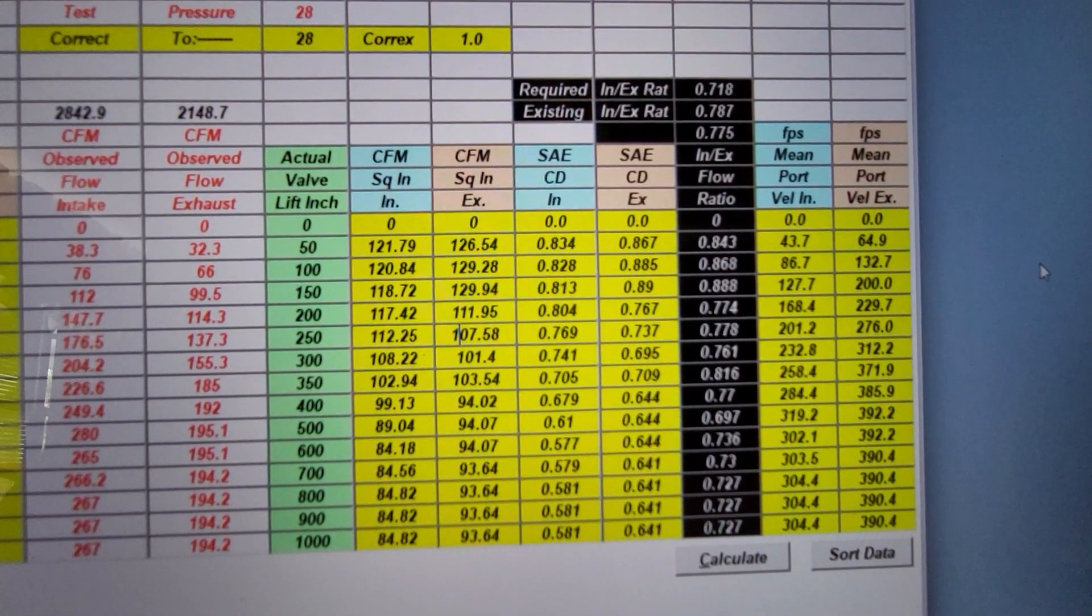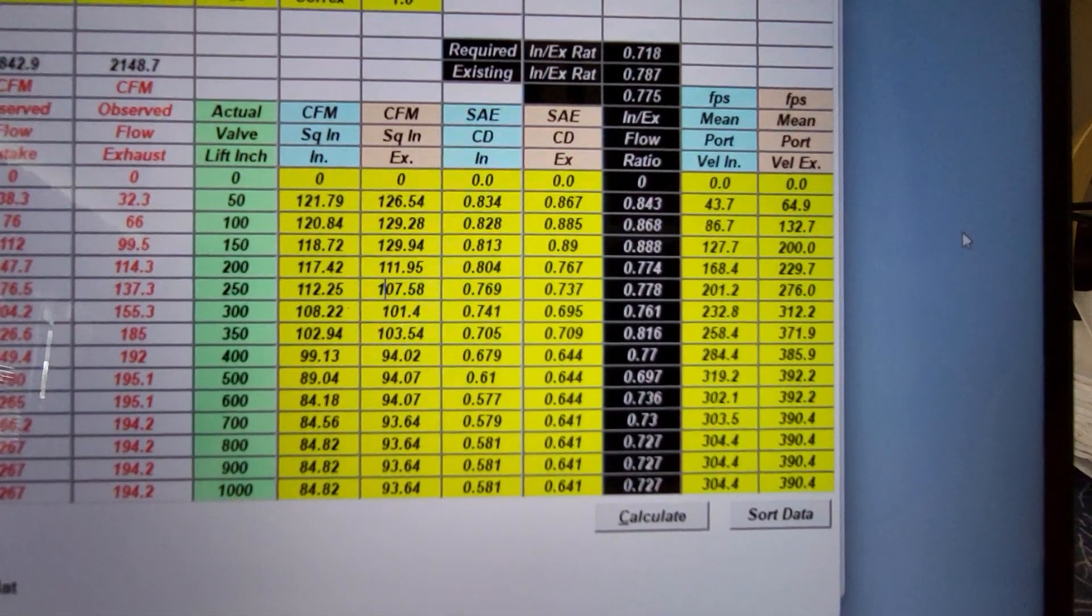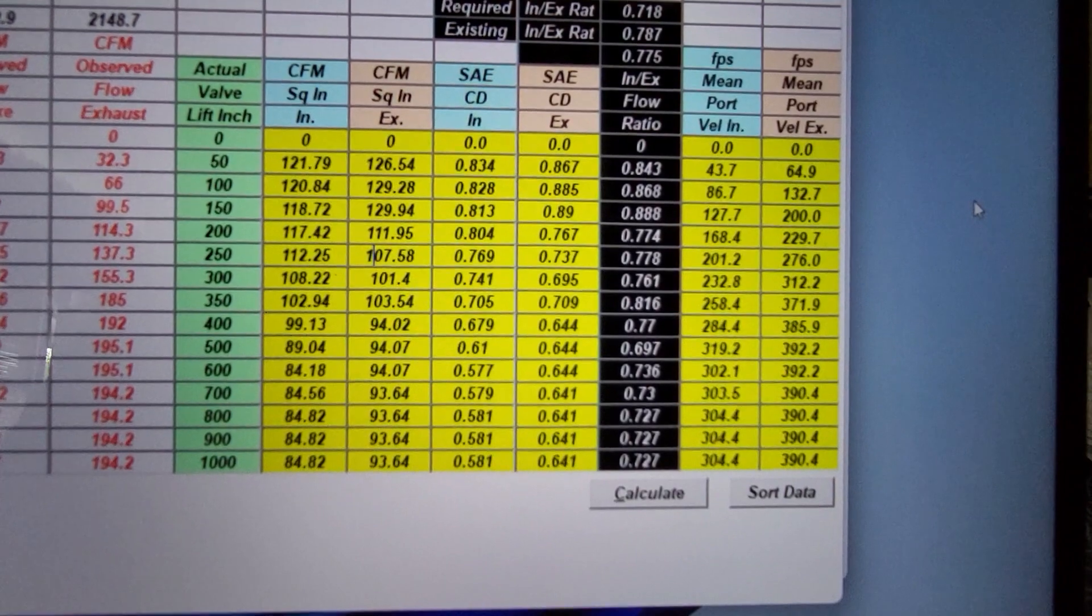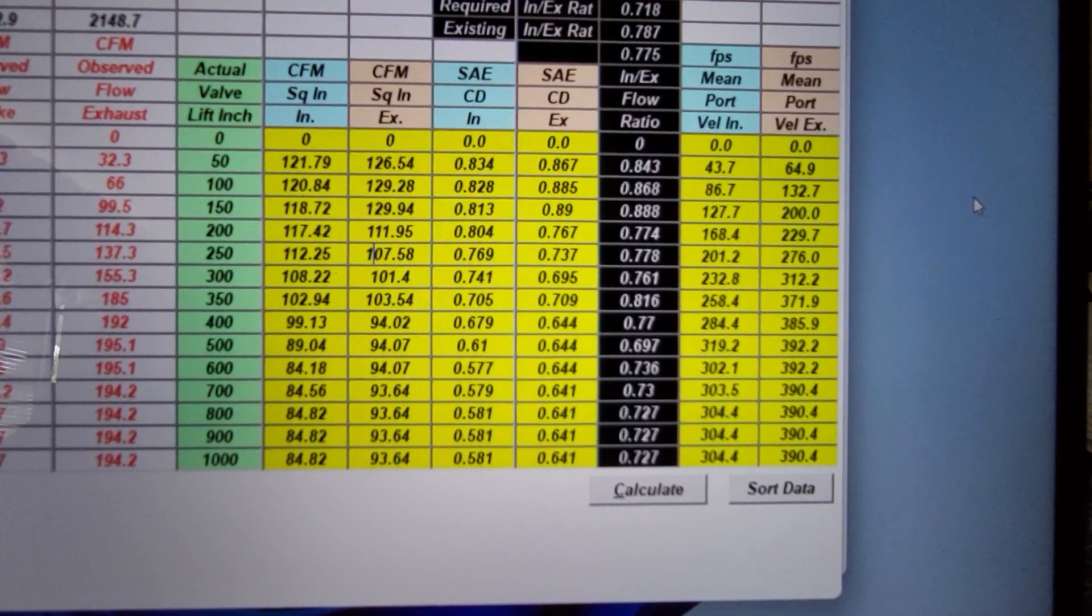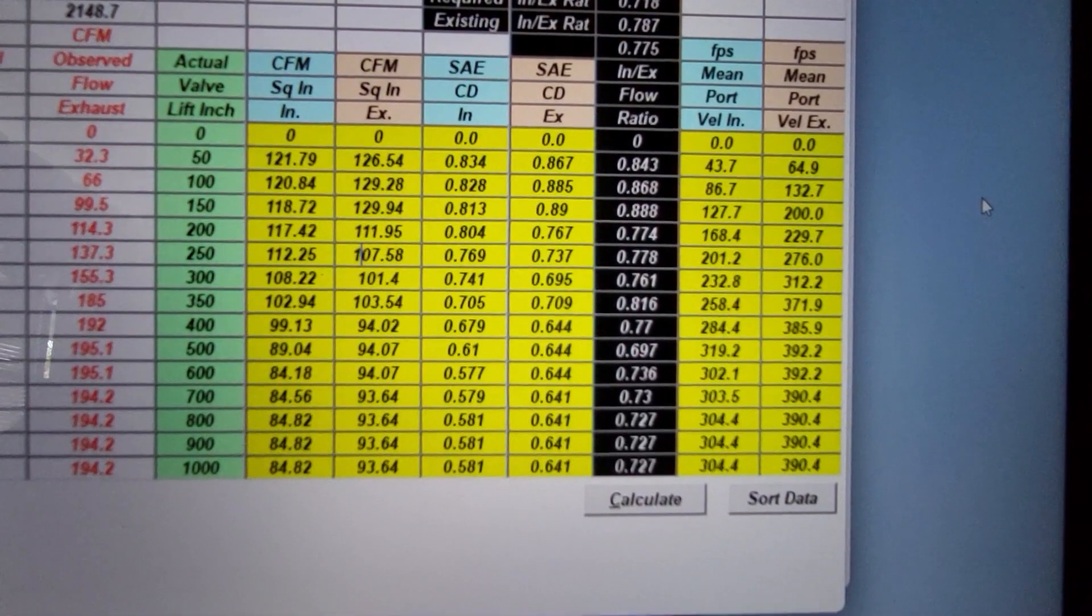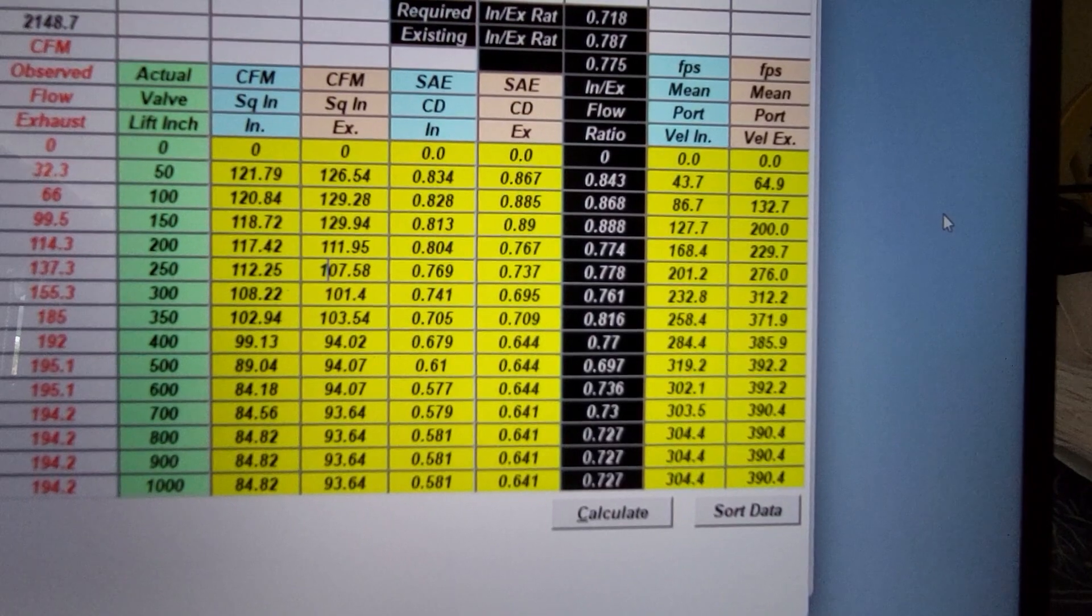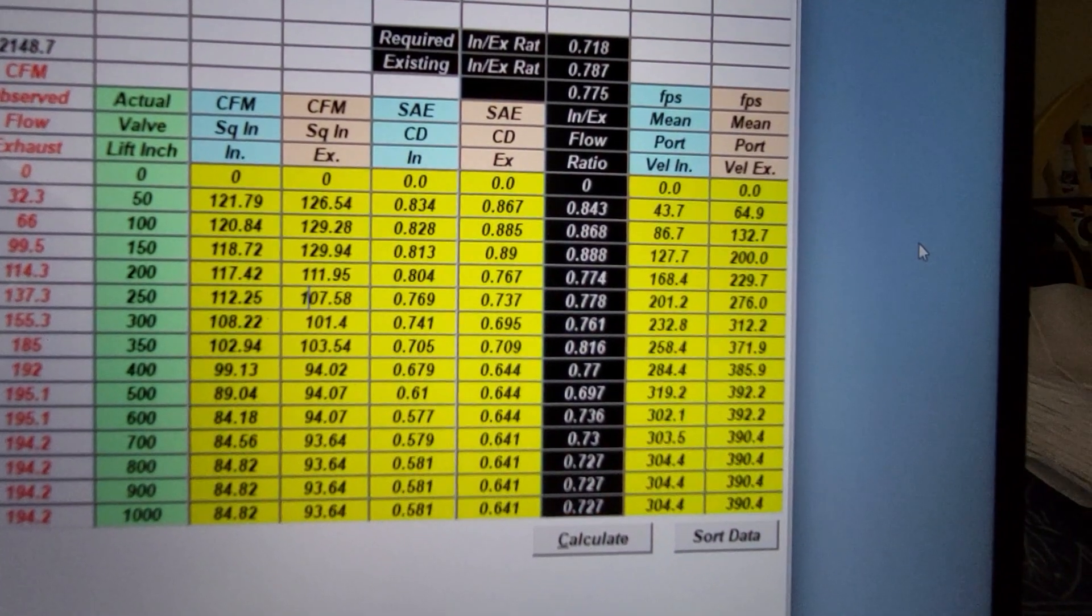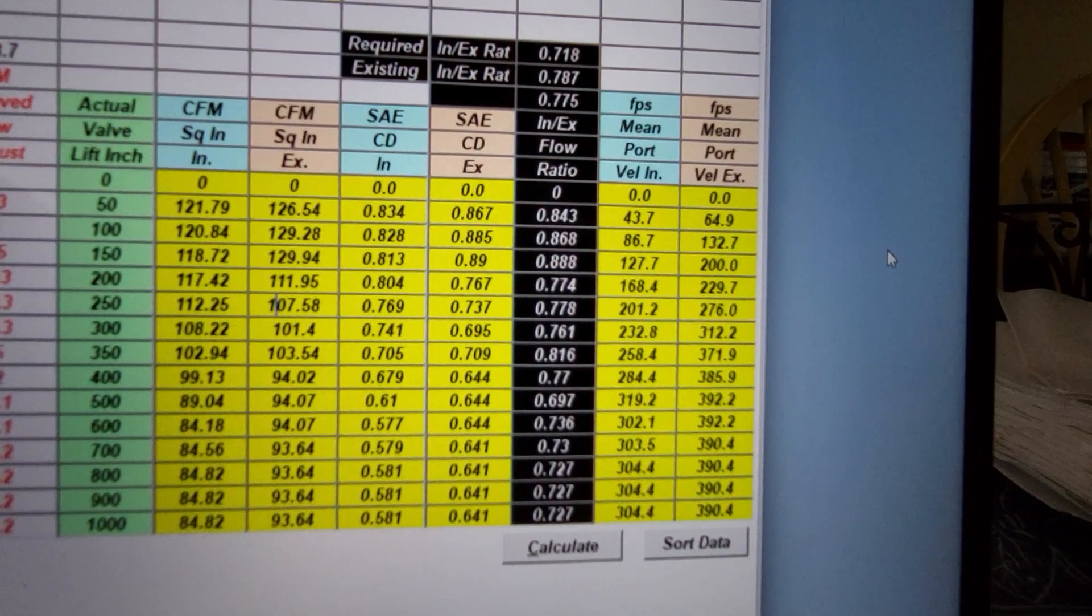We can also take a look at our port velocities. We're going to get a graph on this, but if we take a look at our intake, 319 is our max at 500 lift. That's pretty darn close to the 320 I was looking for. Lots of other guys may use different air speeds, but that worked out really well and at that lift it will definitely ram the cylinder really well.